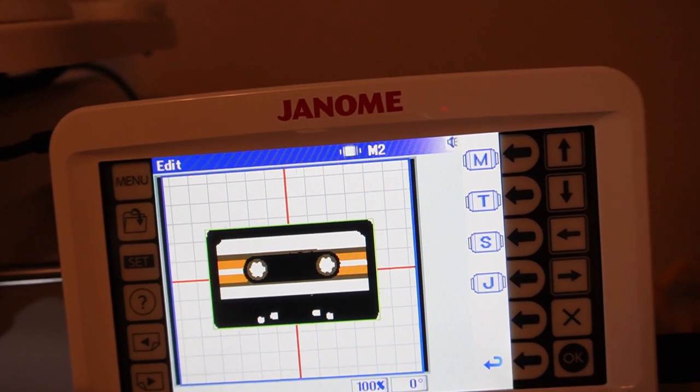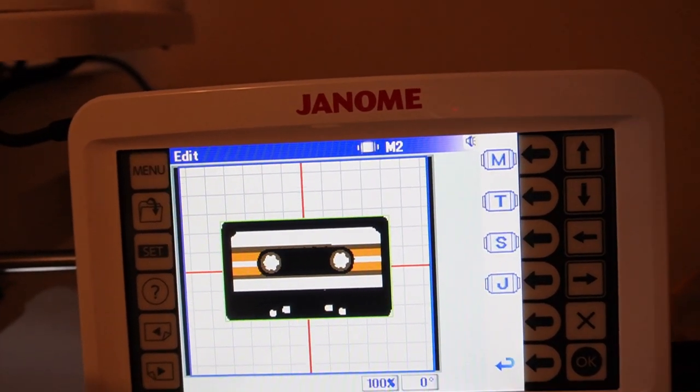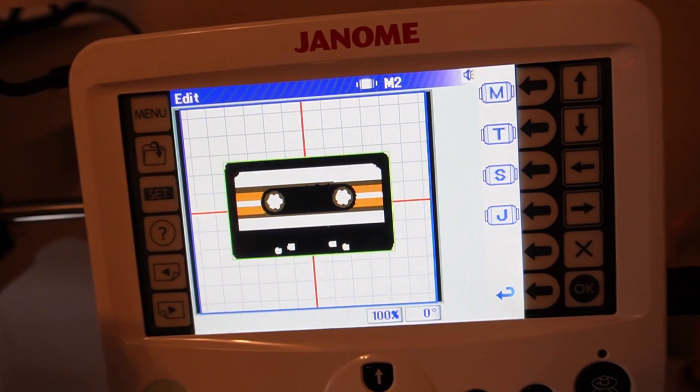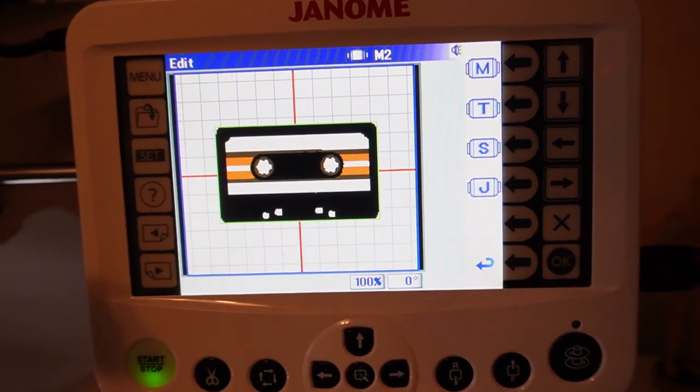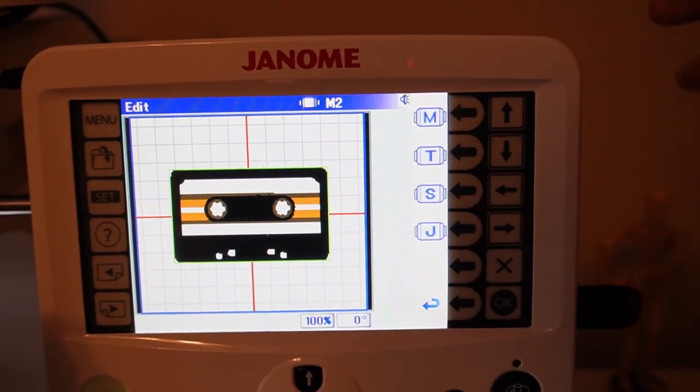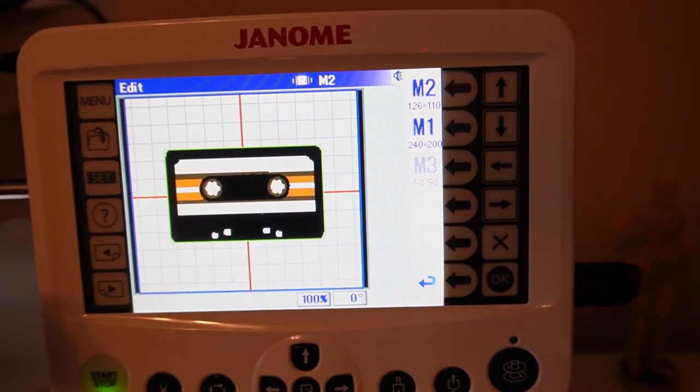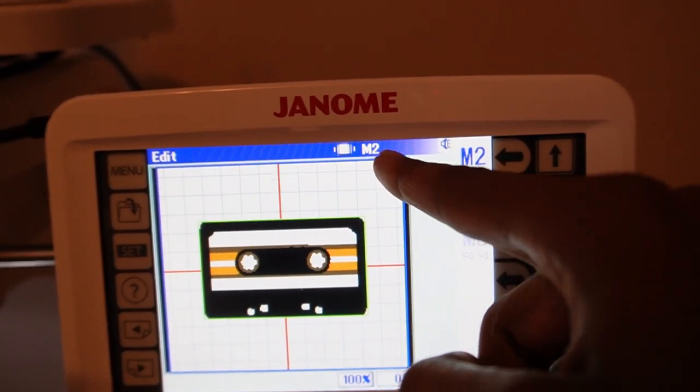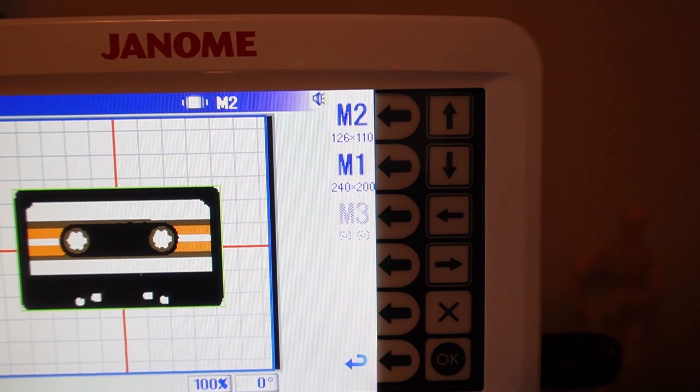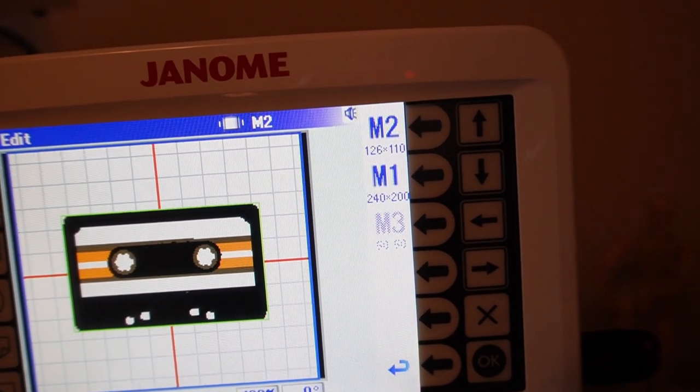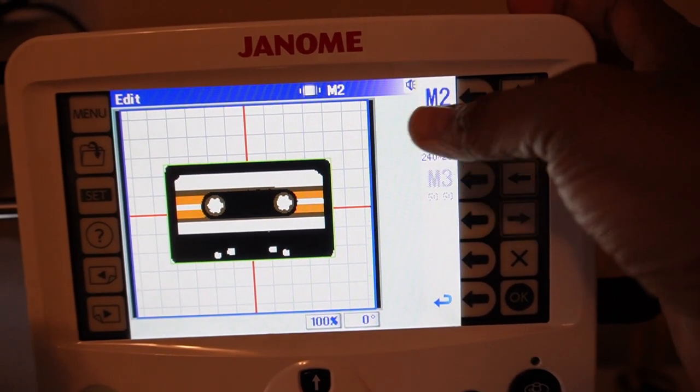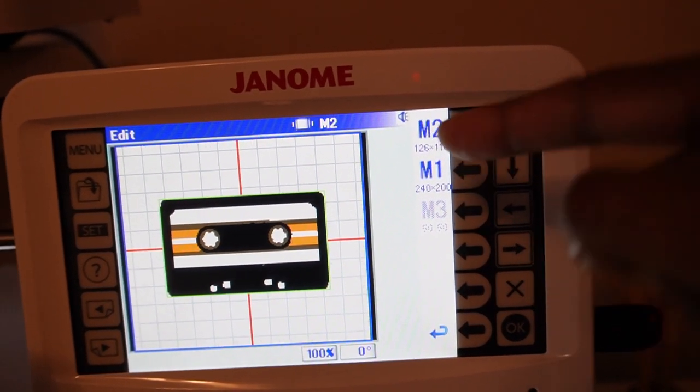Most people are going to buy either a Durkee or a Easy Frame hat hoop. I have the Durkee and those hoops only run around from $80 to $100. So the thing about that is you cannot select the specific size of the hoop. The only thing that you can do for the Durkee hoop is to select M2, which I'm embroidering this on a hat. So I have M2 selected and that is a 126 by 110 millimeter frame.